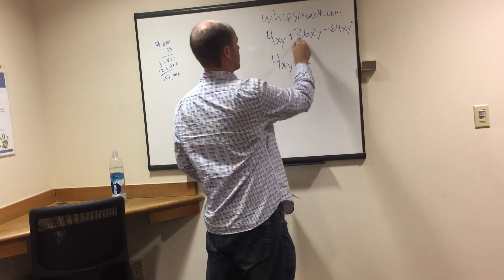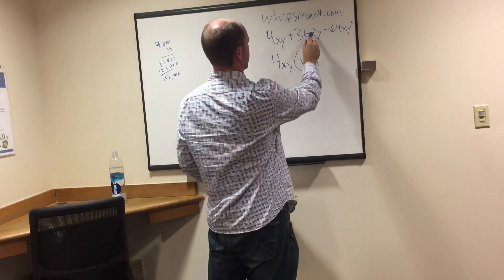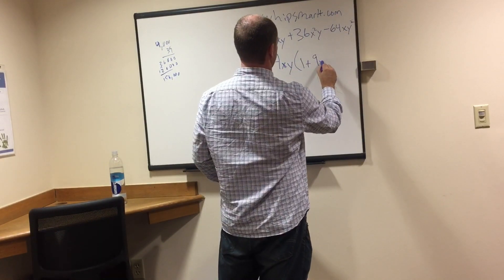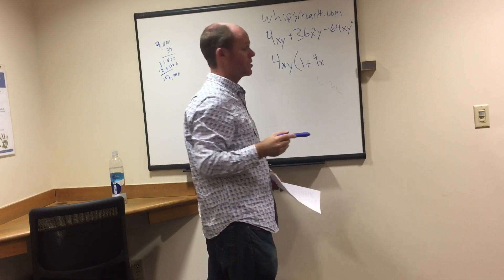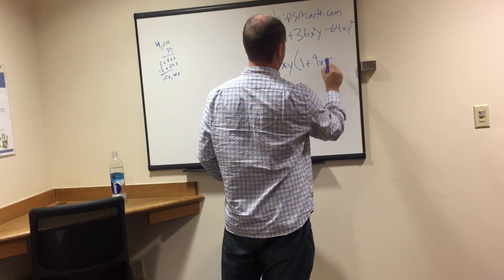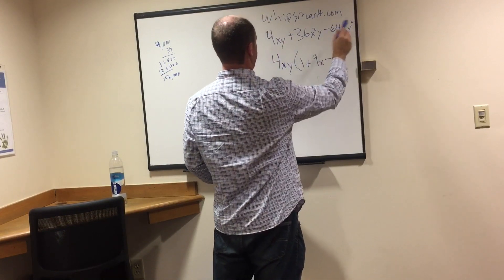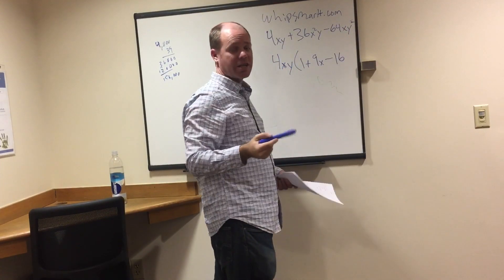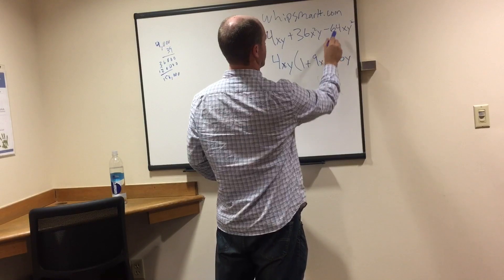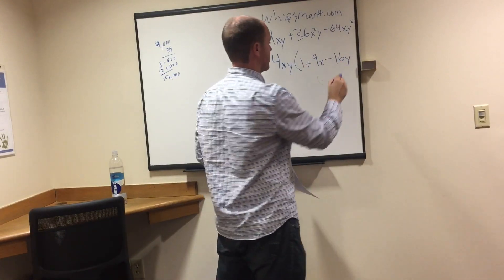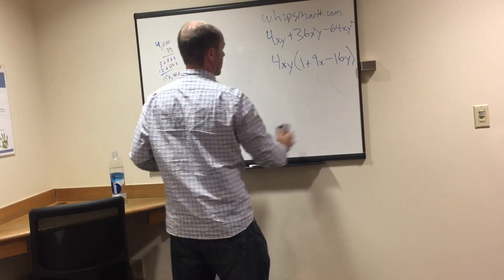Now we've done the hard work. We factor out 4xy: the first term 4xy divided by 4xy gives us 1. Four times nine is 36, and we need an x to get x squared, so the second term gives us 9x. Four times 16 is 64, and we need an extra y, so the last term gives us negative 16y. Our answer is 4xy(1 + 9x − 16y).